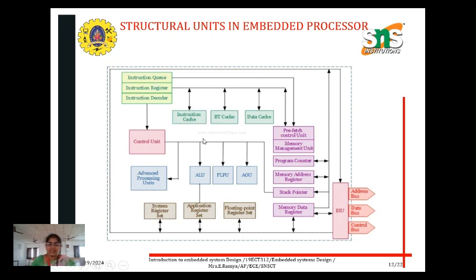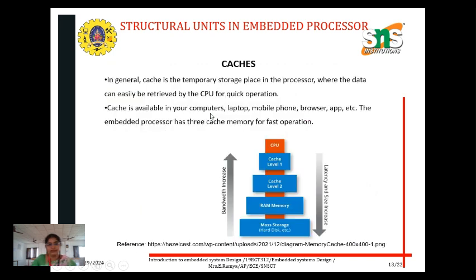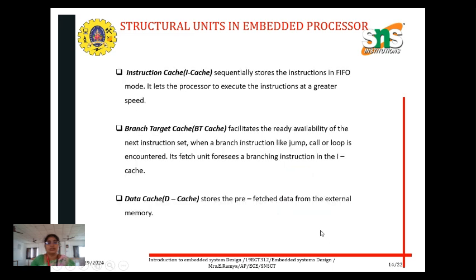What is cache? Cache is nothing but temporary storage — we use it to store information temporarily, using the instruction cache. Cache is available in computers, laptops, mobile phones, browsers, apps, etc. The embedded processor has three levels of cache memory for fastest operation: cache level 1, cache level 2, and RAM memory. If bandwidth is increased, the latency and size of the caches will decrease. The types include instruction cache, branch target cache (BT cache), and data cache.